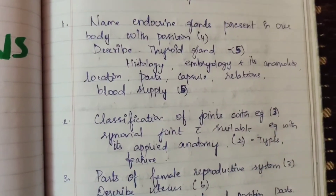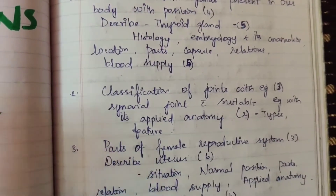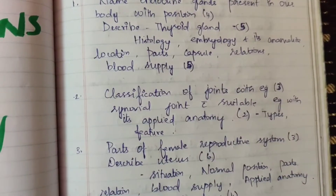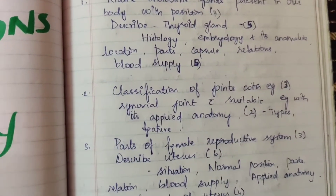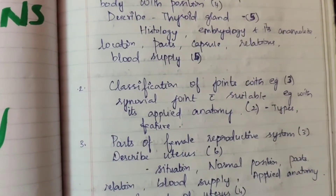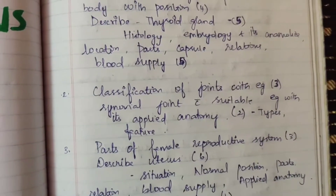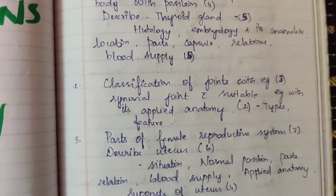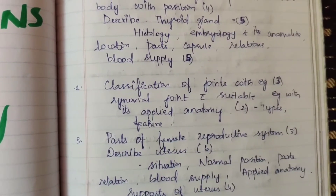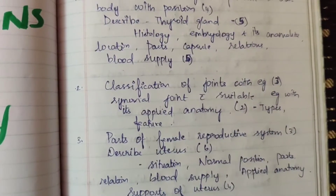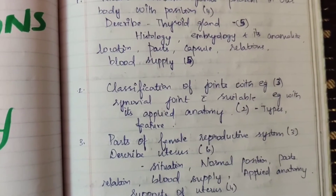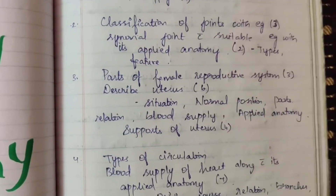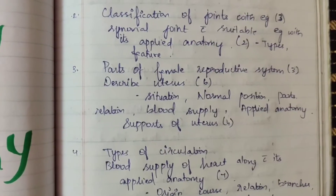Thyroid gland topic appeared 5 times. It may be 15 marks — 5 marks will be added to make 15 marks because if you have any useful questions, if you have 15 marks, 5 marks will be brief. Second question: classification of joints with example appeared 3 times, and explain about synovial joint with suitable example and applied anatomy appeared 2 times.